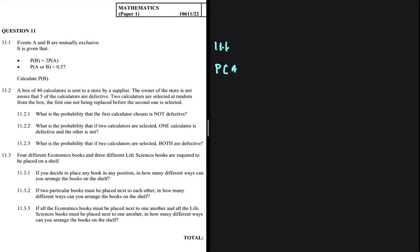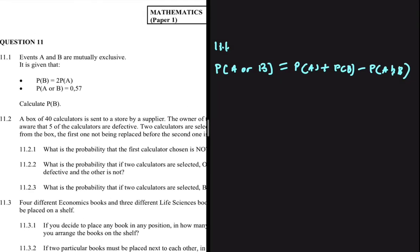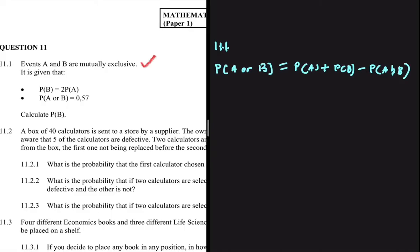The probability of A or B equals the probability of A plus the probability of B minus the probability of A and B. In problem 11.1, we have events A and B that are mutually exclusive. It is given that the probability of B equals 2 times the probability of A, and the probability of A or B equals 0.57.